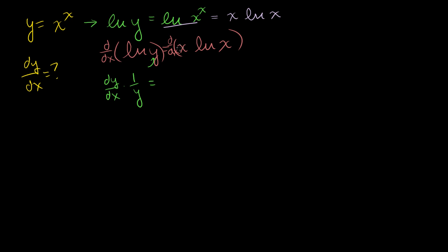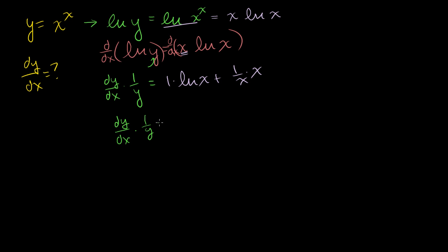On the right side, we apply the product rule to x times the natural log of x. That gives us the derivative of the first term, which is 1, times the second term, the natural log of x, plus the derivative of the second term, which is 1 over x, times the first term x. So the right side is: natural log of x plus x divided by x, which simplifies to natural log of x plus 1.